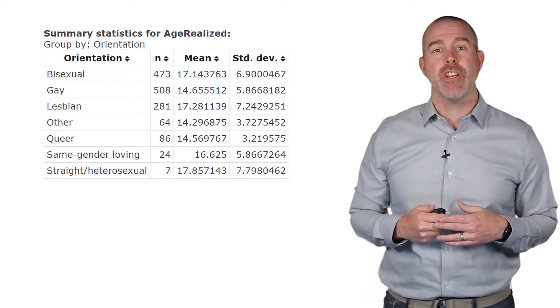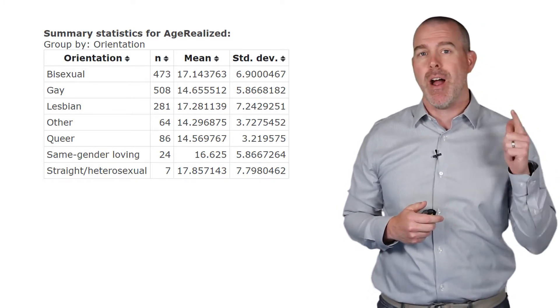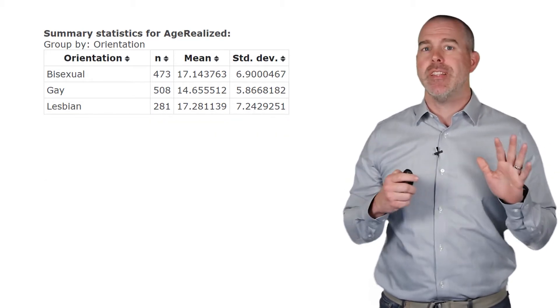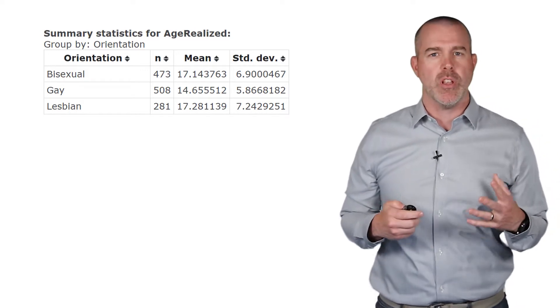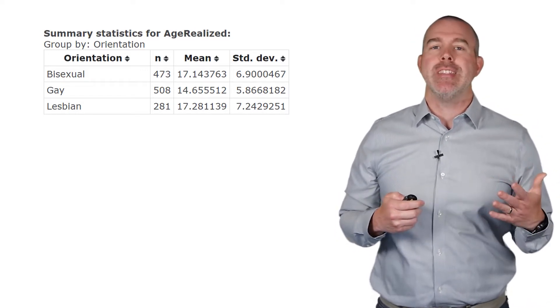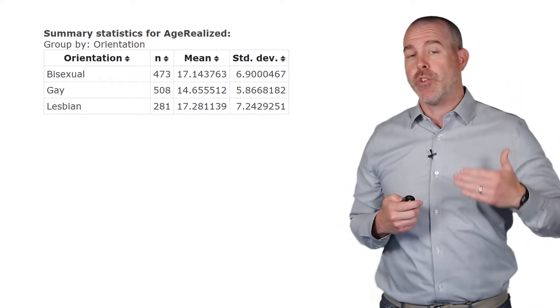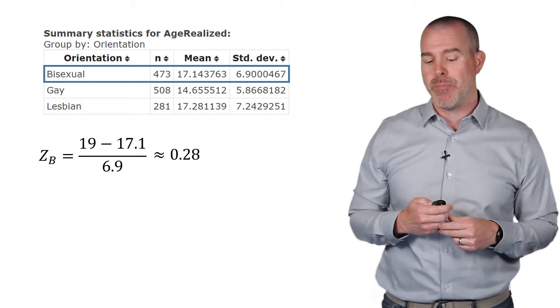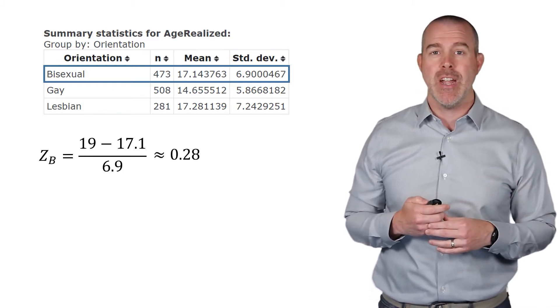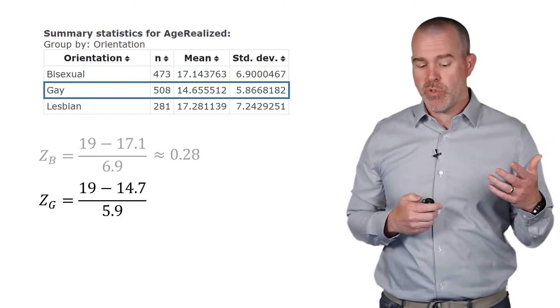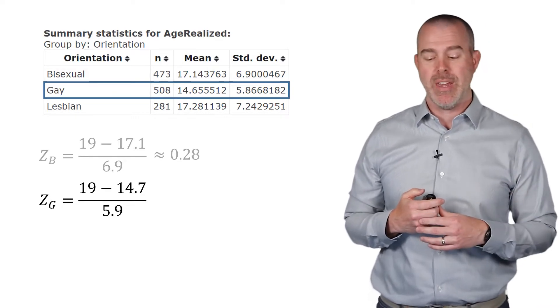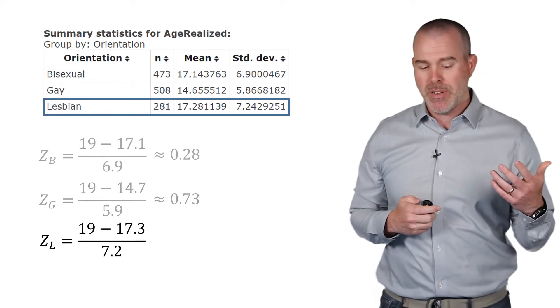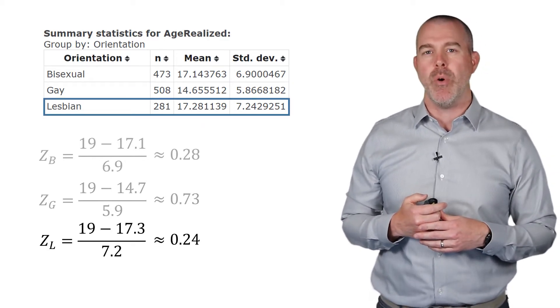I have the mean and standard deviation of the age individuals realize their sexual orientation from our lesbian, gay, bisexual database. I'll put the link in the description. These are grouped by orientation. Let's just look at bisexual, gay, and lesbian—those are the largest sample sizes. Suppose we have someone who's age 19 and we want to know their Z score depending on which group they're in. For a bisexual individual, we take 19 minus the mean 17.1, divide by the standard deviation 6.9, we get about 0.28. So they're about 0.28 standard deviations above the mean if they're bisexual. For gay individuals, 19 minus 14.7 divided by 5.9 gives us 0.73 standard deviations above the mean. For lesbian, we get about 0.24.